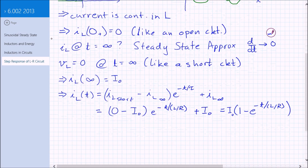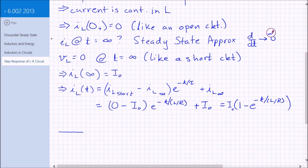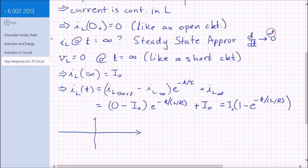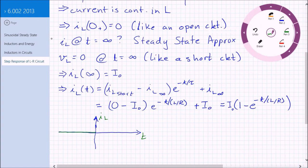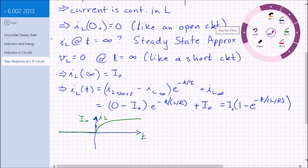If we graph that, we get... So, it goes up, there you go. Okay. And it goes up to the value I0. So, this is very much like a voltage where you try to change the voltage, but it doesn't change instantaneously. With an inductor, you try to change the current, but the current doesn't change instantaneously. And you end up with this type of exponential step.